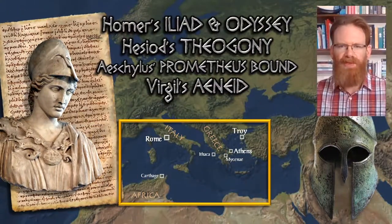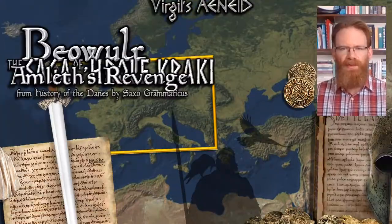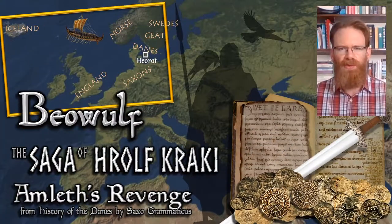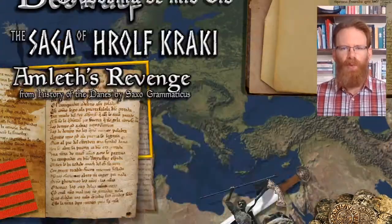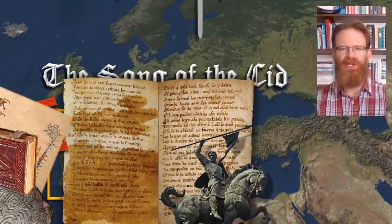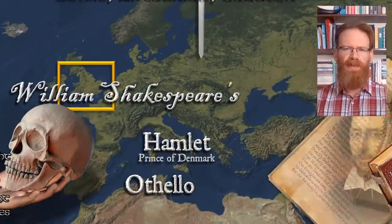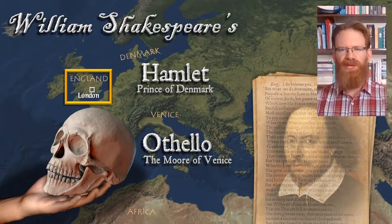We'll read some of the most famous works of classical literature, such as selections of Homer's Iliad and Odyssey, and Virgil's Aeneid. From there, we'll move into northern Europe in the early Middle Ages. We'll read the medieval Spanish epic of El Cid, some ancient Celtic literature, and Arthurian literature from the later Middle Ages. And we'll finish the semester with William Shakespeare's Othello and Hamlet.